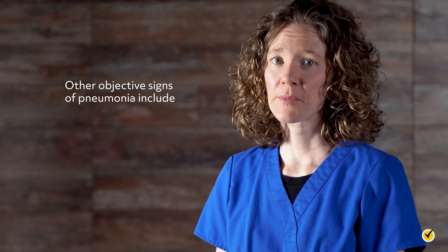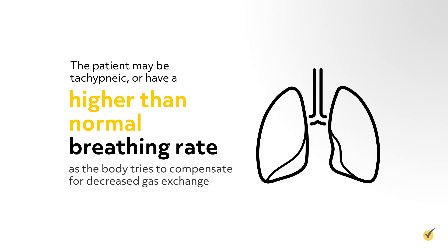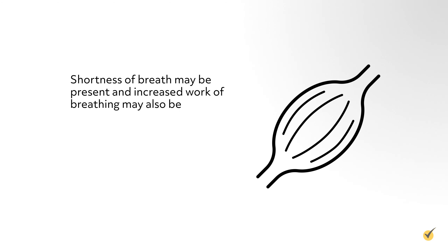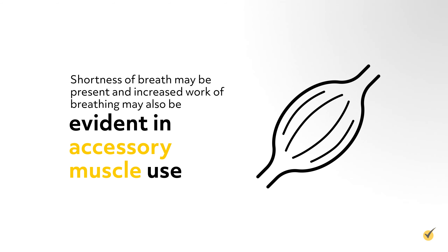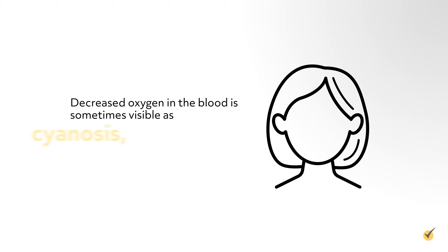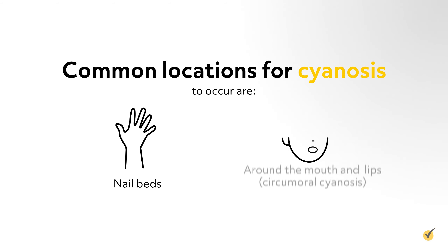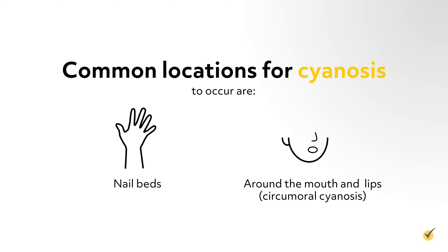Other objective signs of pneumonia include changes in respiratory status. The patient may be tachypneic, or have a higher than normal breathing rate, as the body tries to compensate for decreased gas exchange. Increased work of breathing may also be evident in accessory muscle use. Pulse oximetry may reveal a decreased saturation of oxygen, or SpO2, in the blood. Decreased oxygen in the blood is sometimes visible as cyanosis, a bluish tinge to the skin, occurring at the nail beds or around the mouth and lips — called circumoral cyanosis.